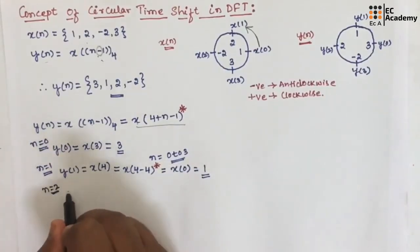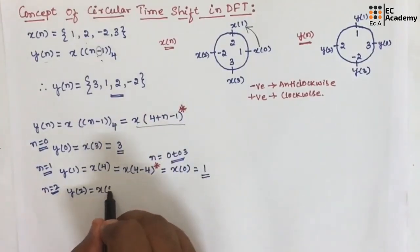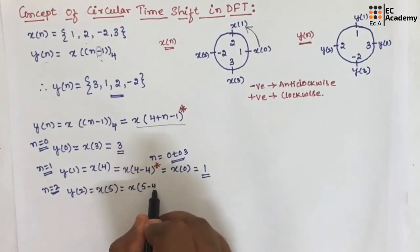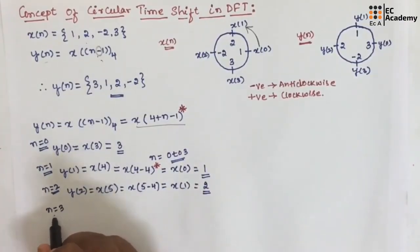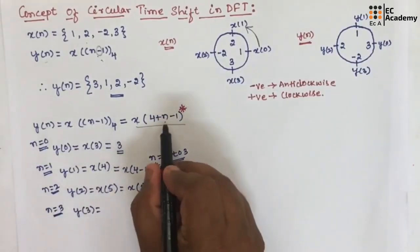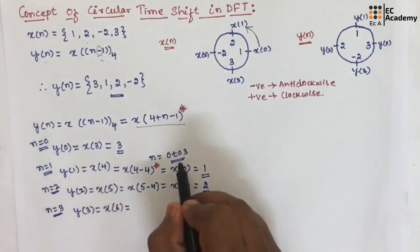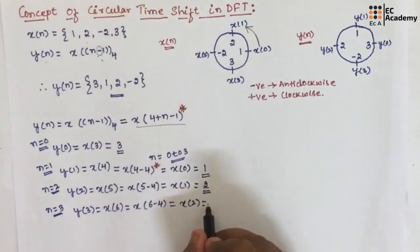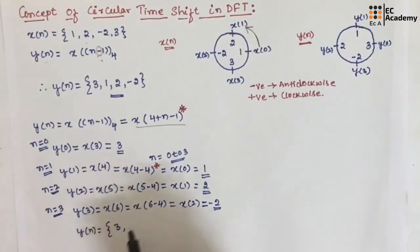If you put n equal to 2, y of 2 equals x of (4 plus 2 minus 1), which is x of 5. Again, 5 exceeds the range, so we subtract the length: x of (5 minus 4) equals x of 1, which is 2. For n equal to 3, y of 3 equals x of (4 plus 3 minus 1), which is x of 6. Subtracting 4 gives x of 2, which is minus 2. So y of n is: y of 0 is 3, y of 1 is 1, y of 2 is 2, y of 3 is minus 2.